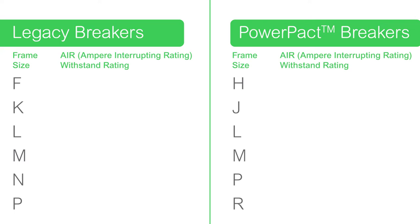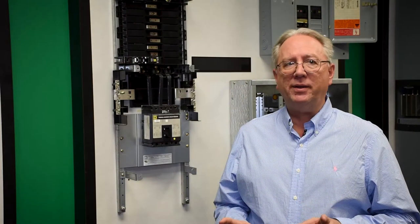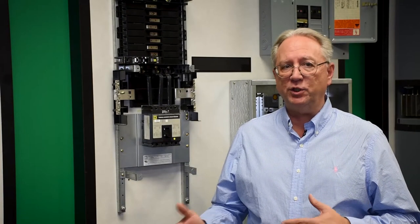You can see from that example that there is a legacy L and a power pack L. The second character is the ampere interrupting rating — its ability to withstand the system fault current. On legacy breakers, those characters are A, H, C, etc. On power pack breakers, that second character is D, G, or J. So you're never going to have the same combination of legacy versus power pack.